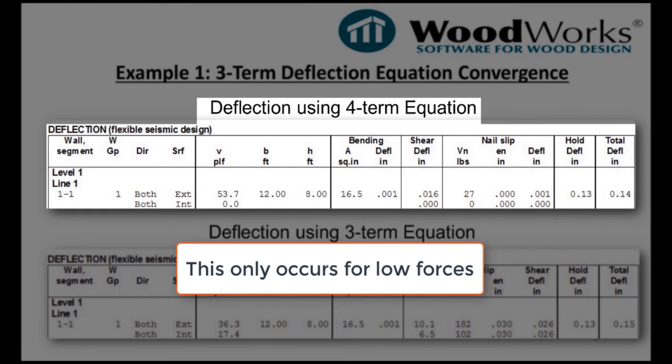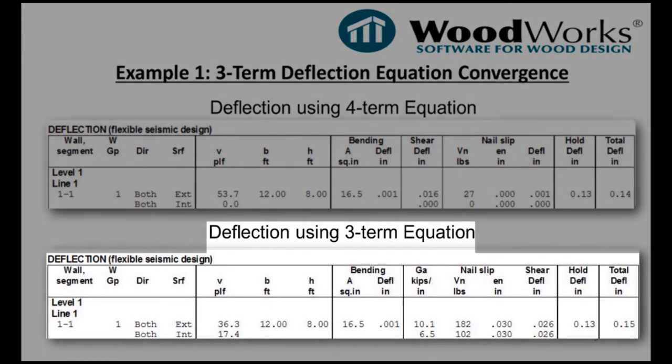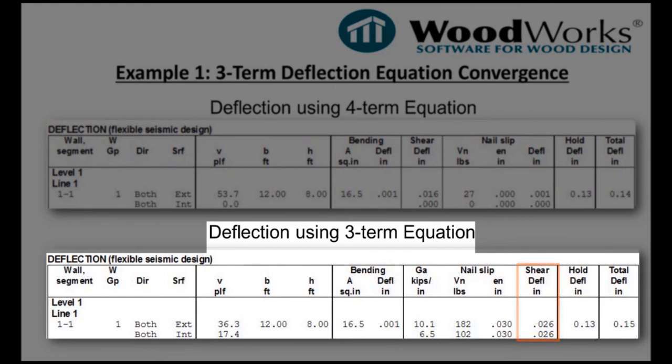while the slip term for wood sheathing does depend on the force. As a result, it is not possible to equalize the deflection between the wood sheathing and gypsum, so all the load is distributed to the stiffer wood sheathing. So using the three-term equation avoids this issue, and force will be distributed to both sides of the wall.